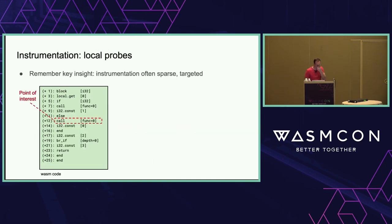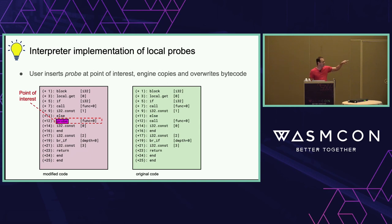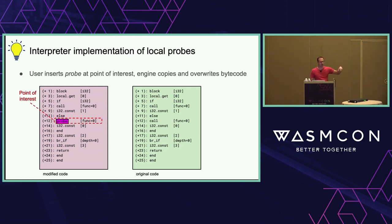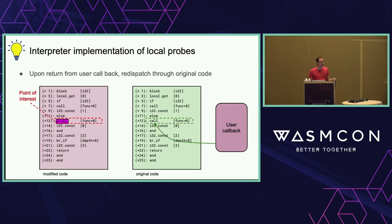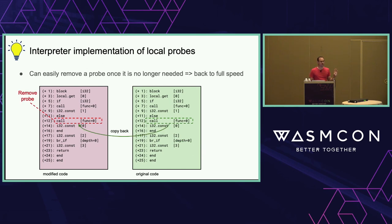Local probes are implemented by overwriting a specific instruction with an illegal instruction. When the interpreter hits that probe instruction, it knows to call user code back and can keep track of the offset. The user callback runs through the API, and since we have a copy of the original code, we execute the original bytecode afterward. If we later decide we don't want that probe, we just copy the original byte back. Insertion and removal are super cheap, there's no overhead on any other bytecodes, and it's all production-worthy — it can always be in the engine.